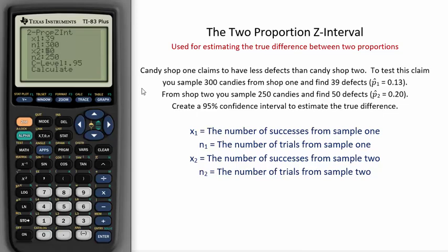Finally, the problem wants us to create a 95% confidence interval to estimate the true difference. It's important to note that this difference is estimated by taking sample proportion 1 minus sample proportion 2. We will get a negative difference here.